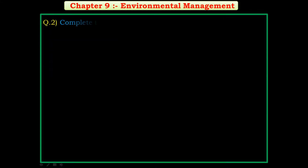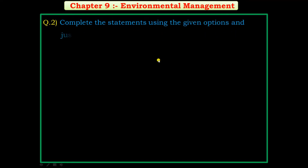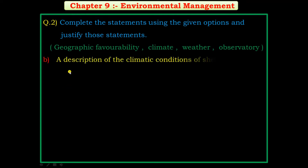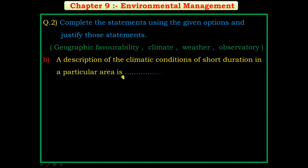Question number 2: Complete the statements using the given options and justify those statements. The options are: geographic favourability, climate, weather, observatory. First question: a discussion of climatic condition of a short duration in a particular area is dash dash dash.